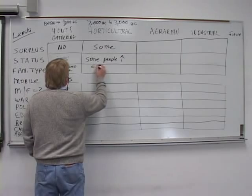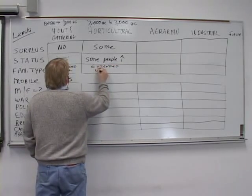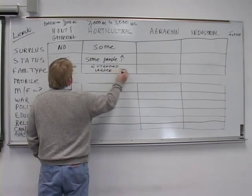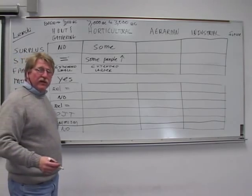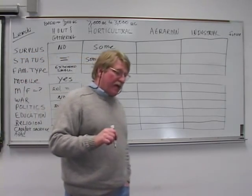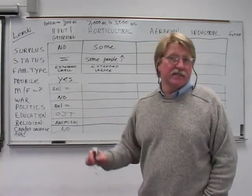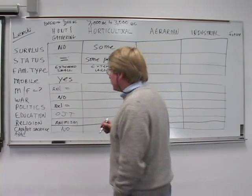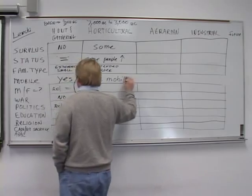Family type was extended: mom, dad, the kids, and relatives, because they're helping each other, and a little bit larger than before. Why? Because you've got a surplus, you've got more food to feed people. What happens to their mobility? They're still following the animals and the crops that nature provides, but since they're planting and domesticating animals, they're less mobile than before. Not moving around quite as much.